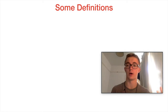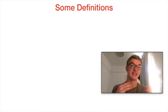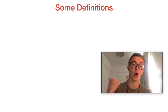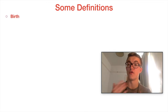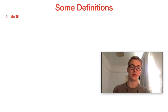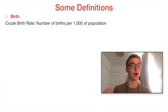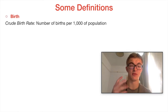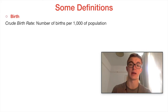The key thing to remember about population change is it's affected by two main things. If we park migration — immigration and emigration — for a moment, it's fundamentally dependent on the number of births and the number of deaths. In terms of birth, the first definition we need to be aware of is crude birth rate, which is the number of births per 1,000 of a population. This tends to be in double figures on average for a country, but can be higher or lower.